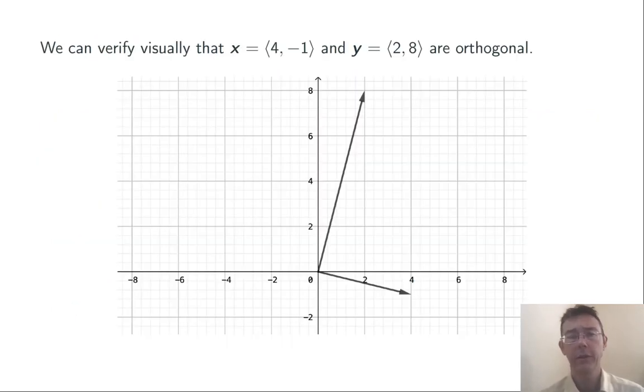Let's draw these vectors in the plane. Here, x = ⟨4, -1⟩ is on the lower right, and y = ⟨2, 8⟩ is drawn more vertically. Clearly, you can see that the angle between them is 90 degrees. These vectors are orthogonal, just as we saw from the dot product.